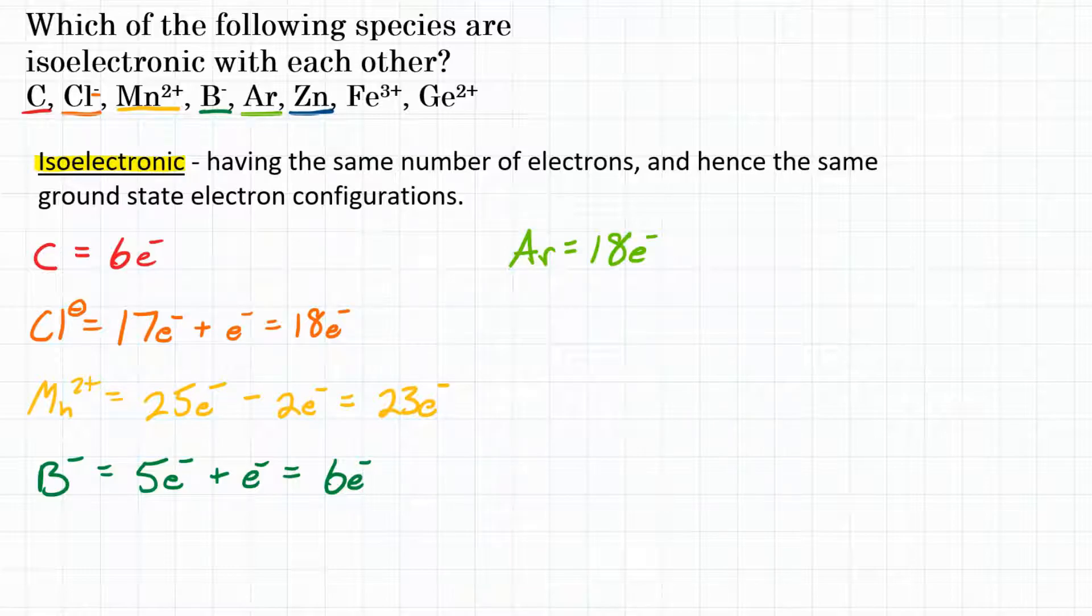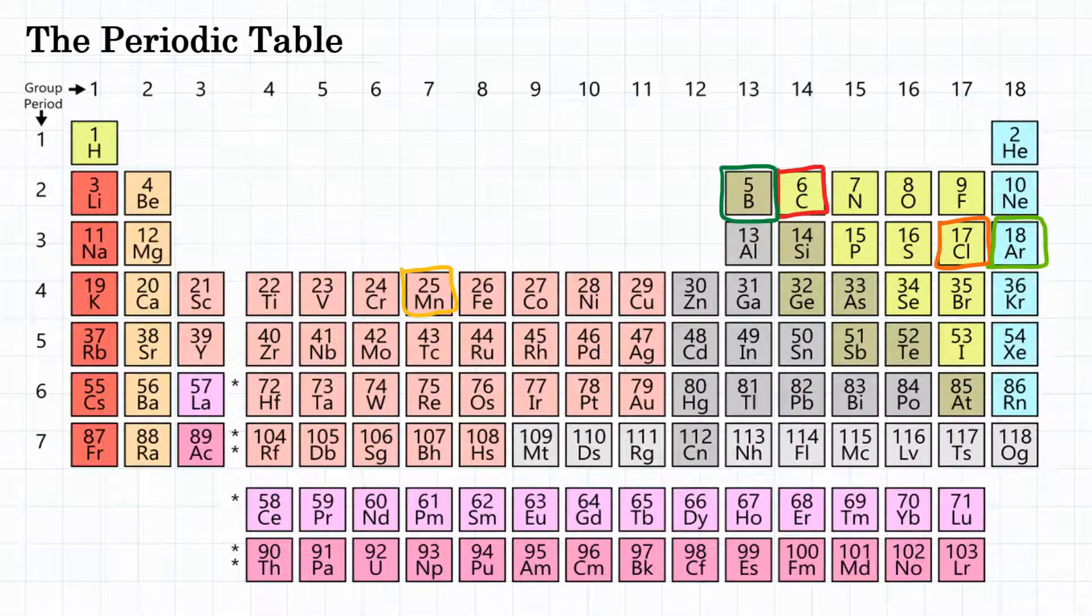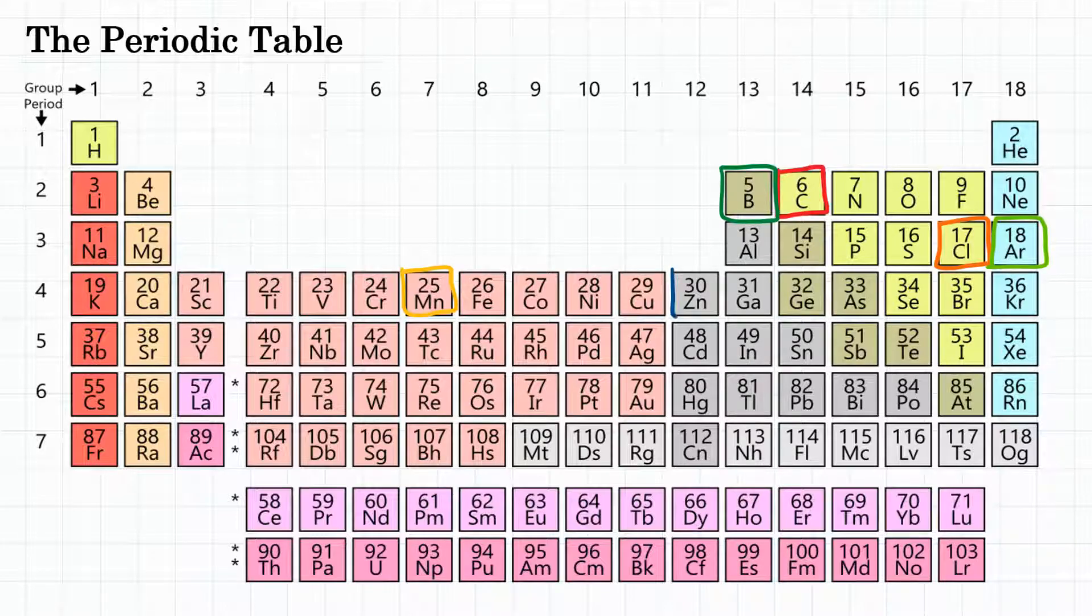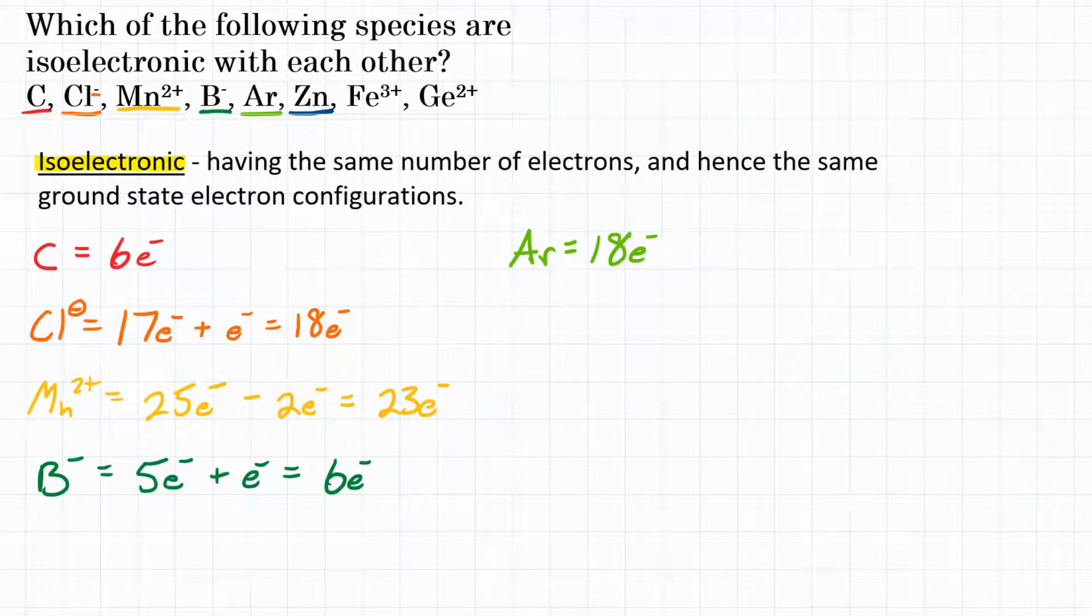Next up is zinc, an atom of zinc. Looking on the periodic table, we find zinc as element 30. So we have 30 electrons for zinc.